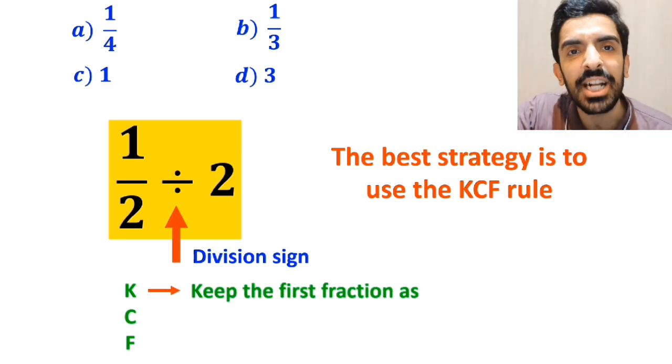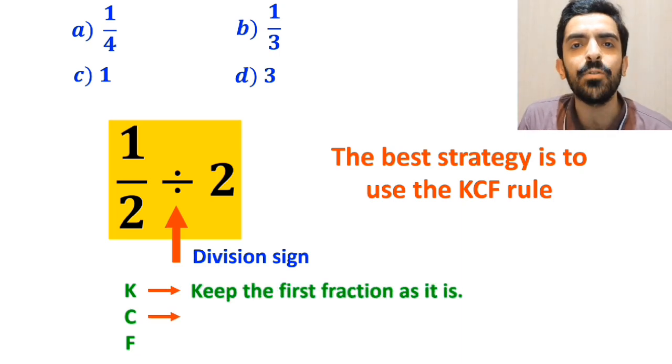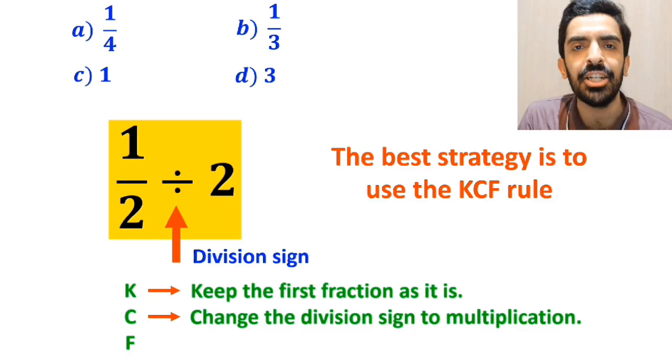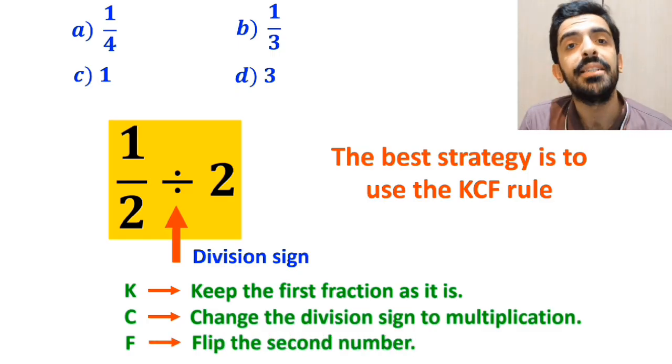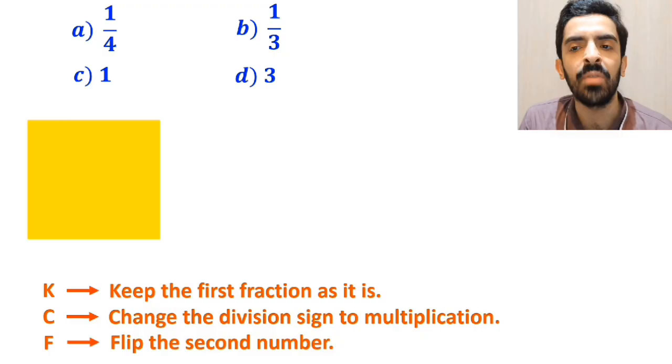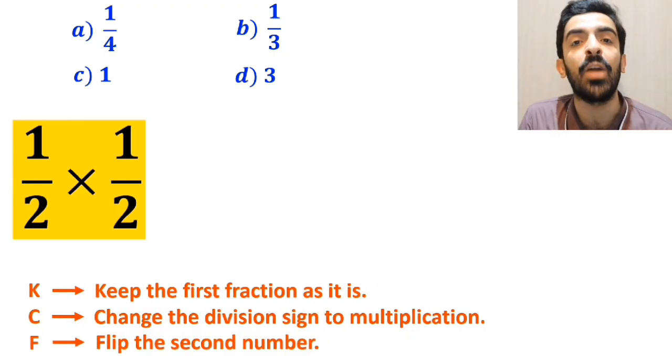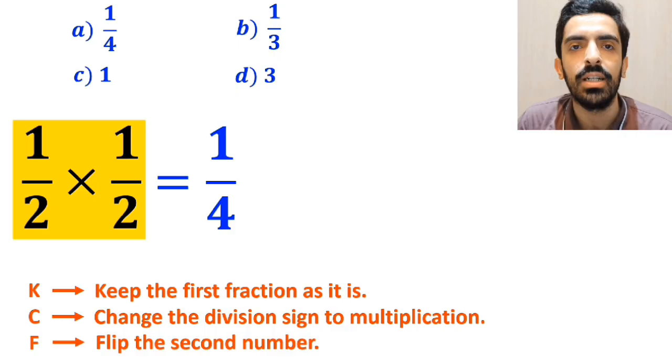And F stands for flip the second number. So instead of the highlighted part, we rewrite it as 1 over 2 multiplied by 1 over 2, which ultimately gives us the answer 1 over 4. So therefore, option A is the correct answer to this question.